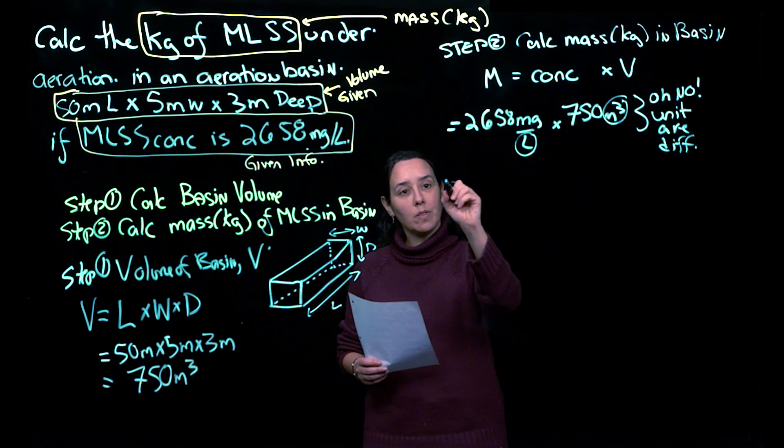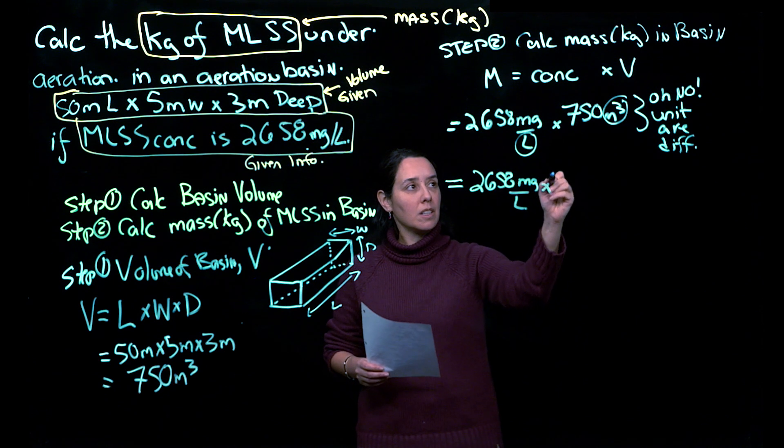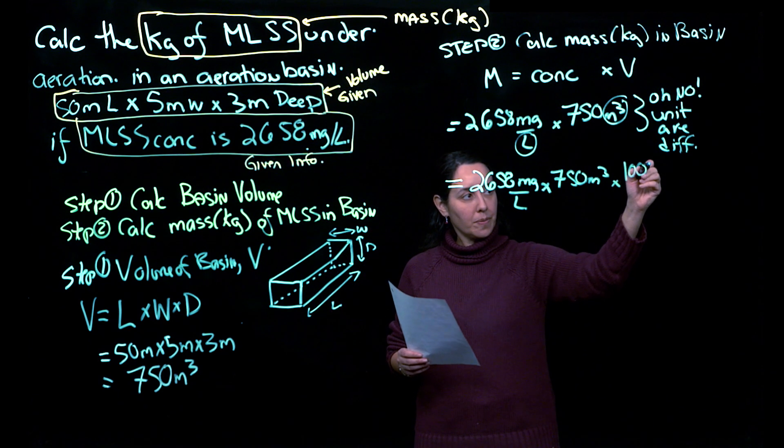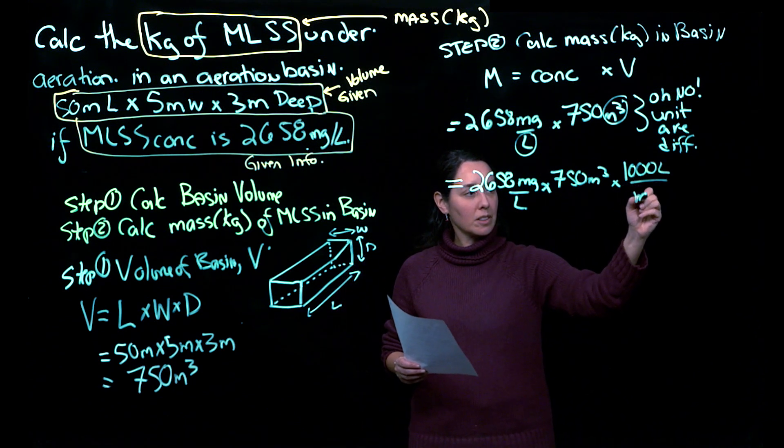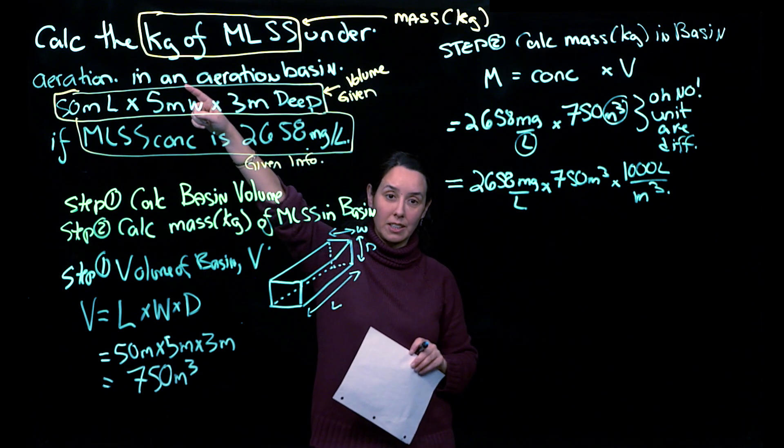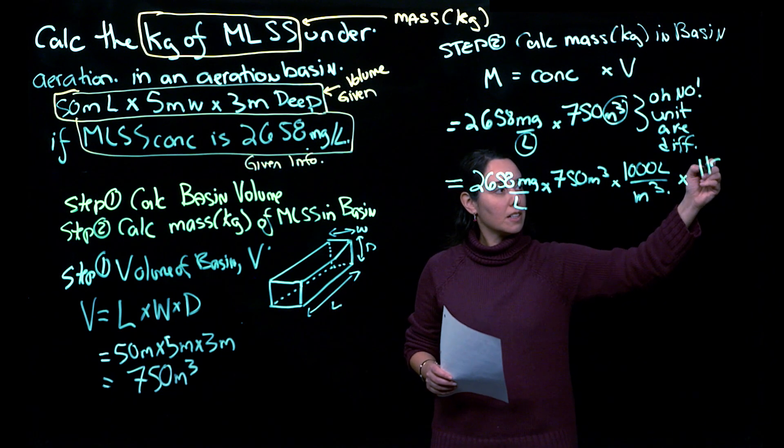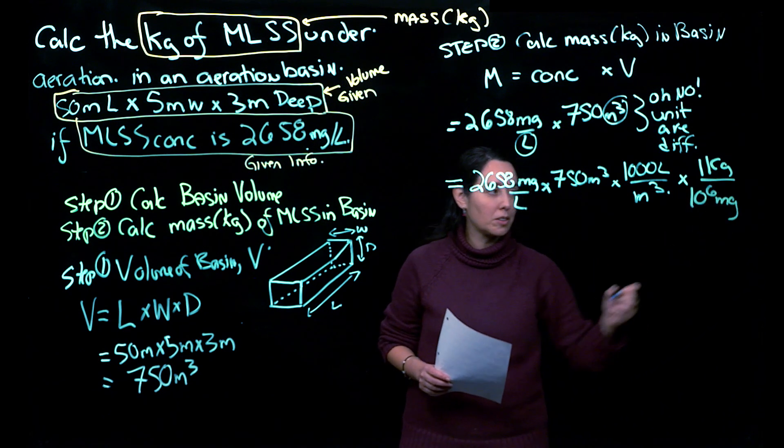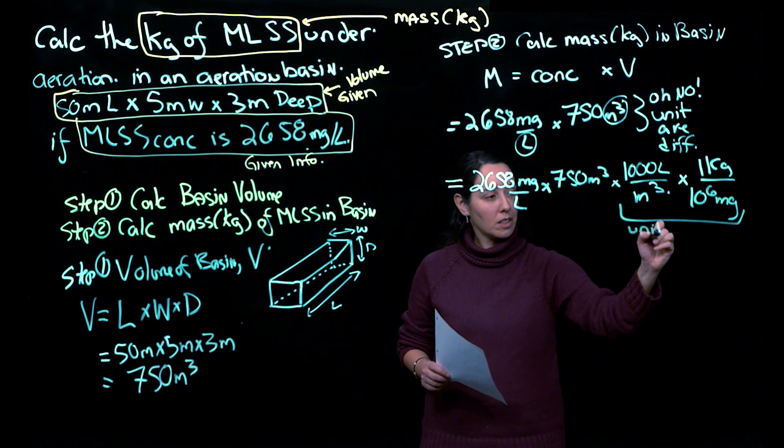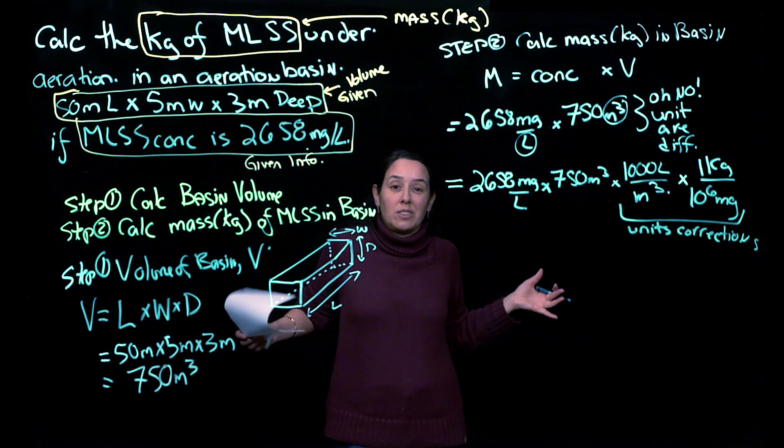So we just have to add in the right units. So we'll go back here and we say 2,658 milligrams per liter times 750 meters cubed times 1,000 liters per meter cubed. And just to throw it in there, the question actually says I want it in kilograms and this is in milligrams. So we actually have to add in one more, which is that for every kilogram is 10 to the 6 milligrams of material. So it's like a lot of little correction terms, these are units corrections that you need to make just to get the answer in the way that you've been asked to put it in.